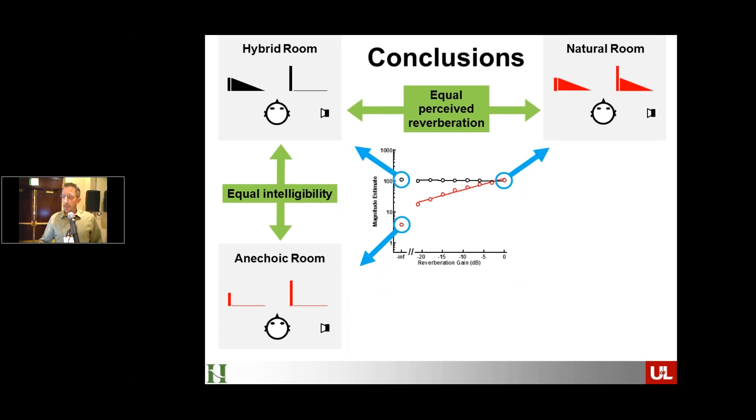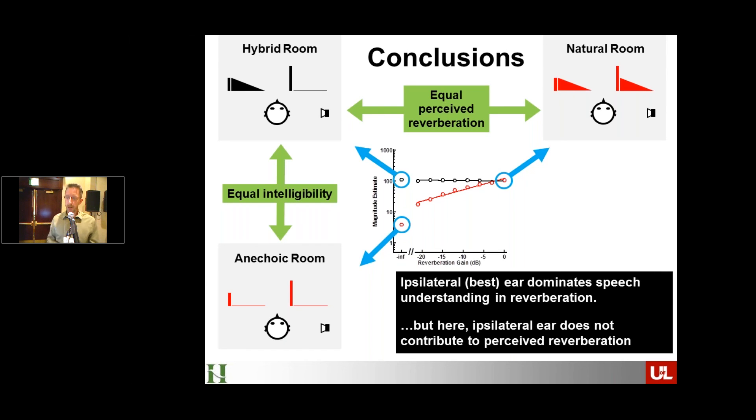Okay. So what does this say? Let's go back and now try and combine this a little bit with experiment one. So basically what we just showed now is that this hybrid signal from experiment two, hybrid room signal results in speech intelligibility that's equal to anechoic space. But it also results in a perceived reverberation characteristic that is equal to the natural room. So this is a very interesting what we're terming dissociation now between perceived reverberation and intelligibility. So it seems like on the one hand the ipsilateral ear dominates speech understanding and reverb. That's probably not so surprising. But the surprising part is that in this situation the ipsilateral ear doesn't appear to be doing anything to our perception of reverberation.